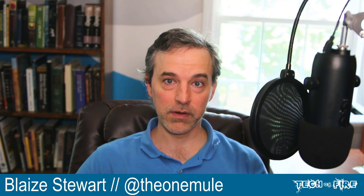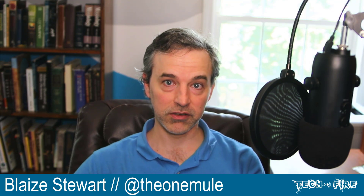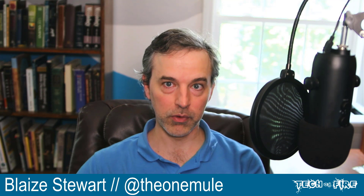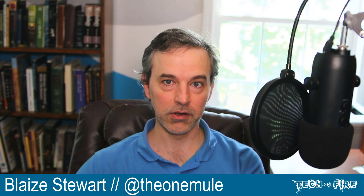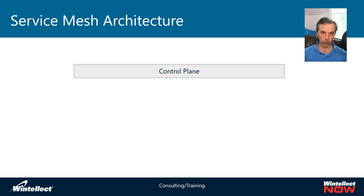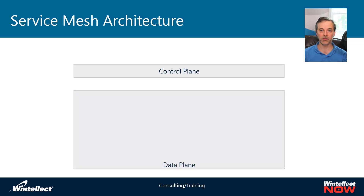To look at a brief review of what a service mesh is, let's take a look at the architecture and get a discussion of how this works, and then we'll go into a deep dive on Linkerd and look at how it works with AKS. So to look at the architecture, we have two basic components: the control plane and the data plane. The data plane is responsible for running your application workloads and the control plane is responsible for managing the service mesh.